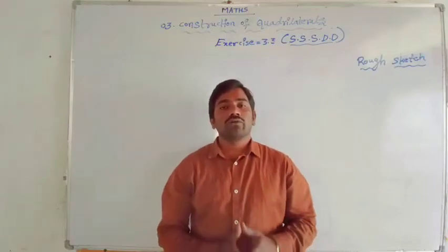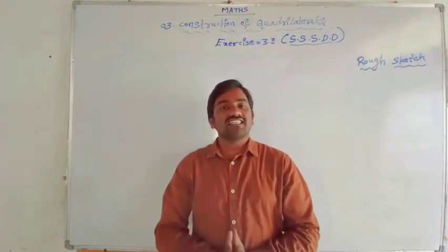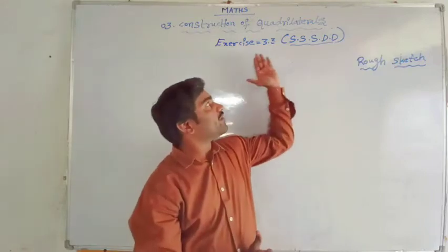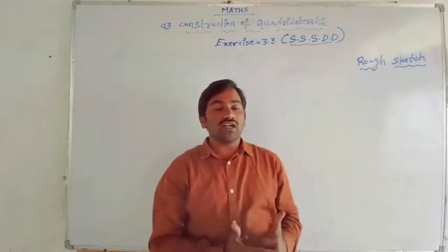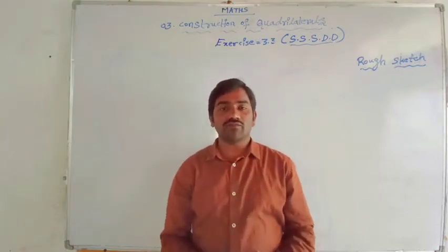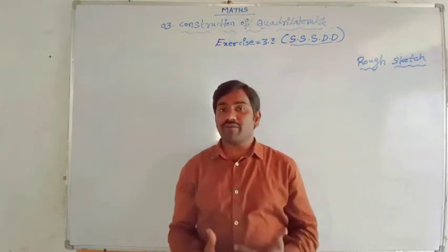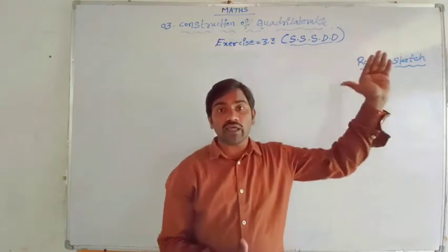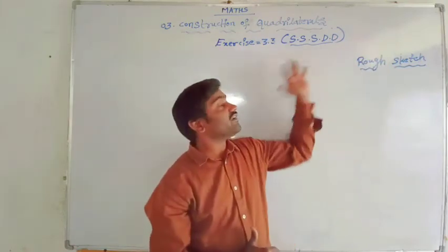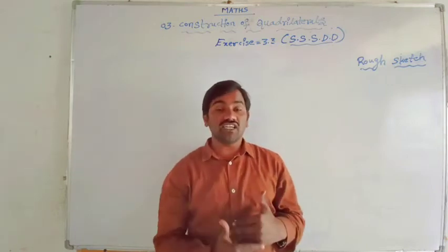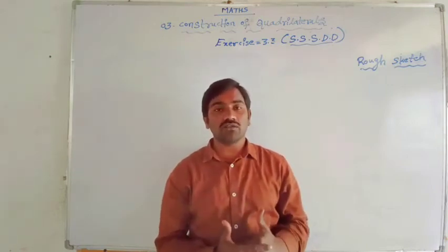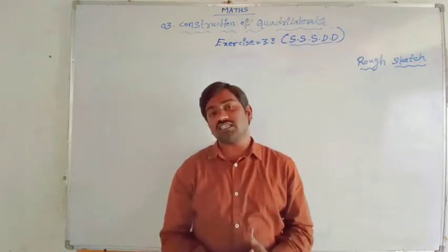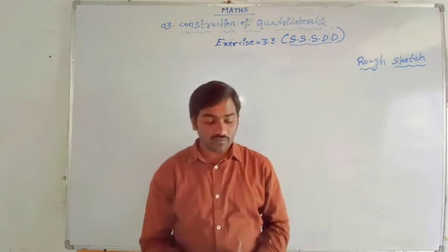Hi children, today you are going to learn 8th class, 3rd chapter - that is construction of quadrilaterals. In this, exercise number 3.3, the kind of quadrilateral where 3 sides and 2 diagonals are given. As we know, every quadrilateral has a maximum of only 2 diagonals. There are only 2 questions in this exercise 3.3, so let us learn without wasting time.